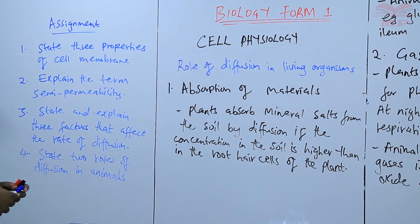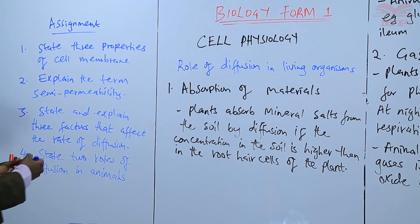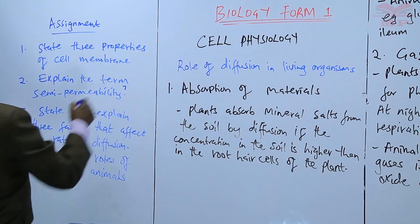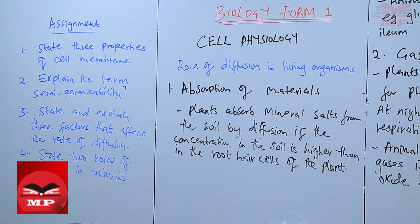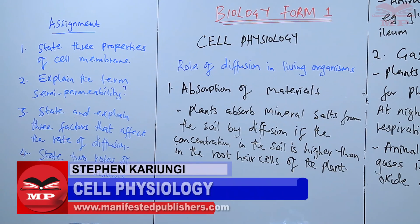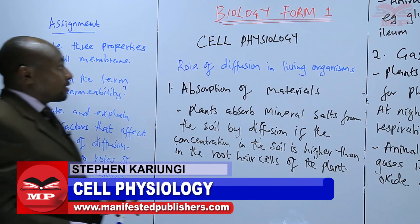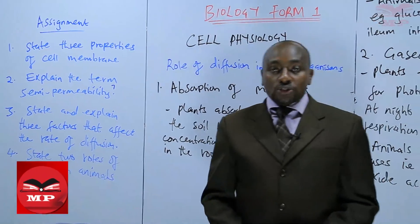We will answer four questions as an assignment for today. Question one: state three properties of the cell membrane. Question two: explain the term semi-permeability. Question three: state and explain three factors that affect the rate of diffusion. Question four: state two roles of diffusion in animals. We are going to stop there for today until the next lesson. See you later.